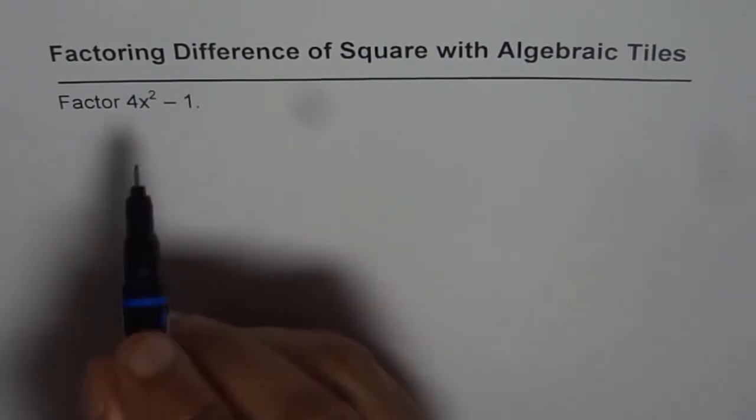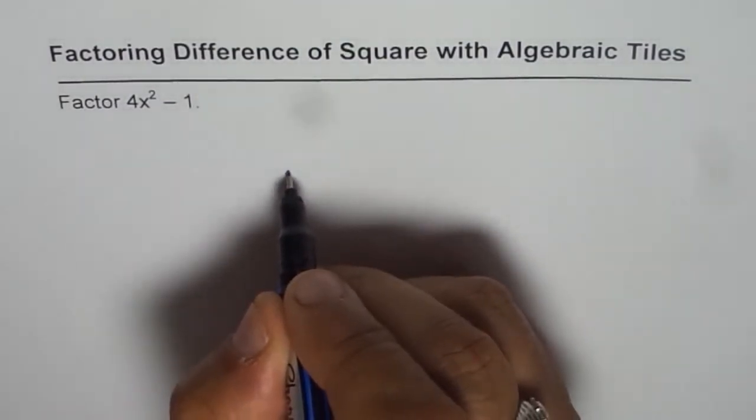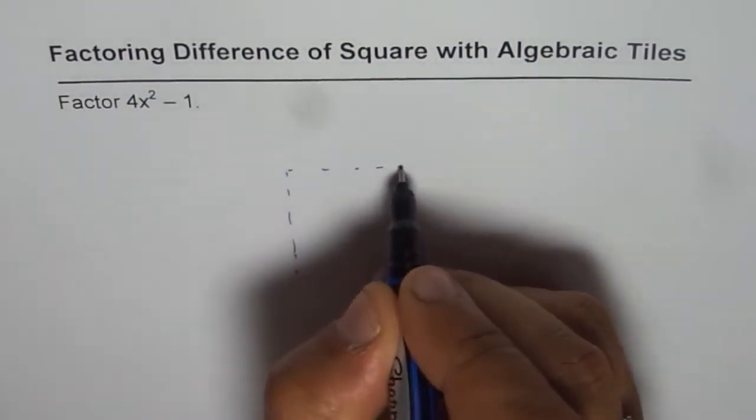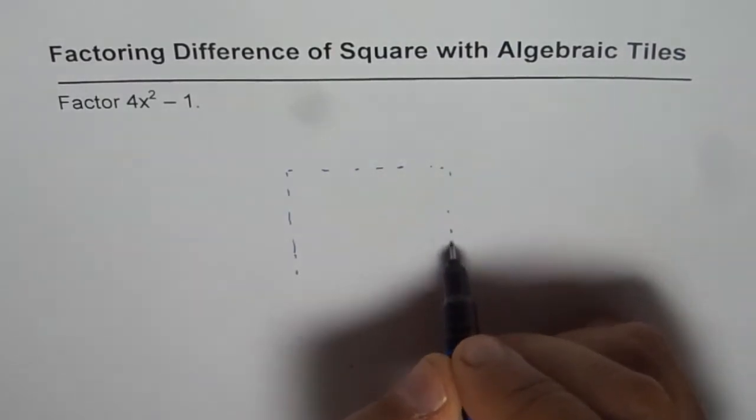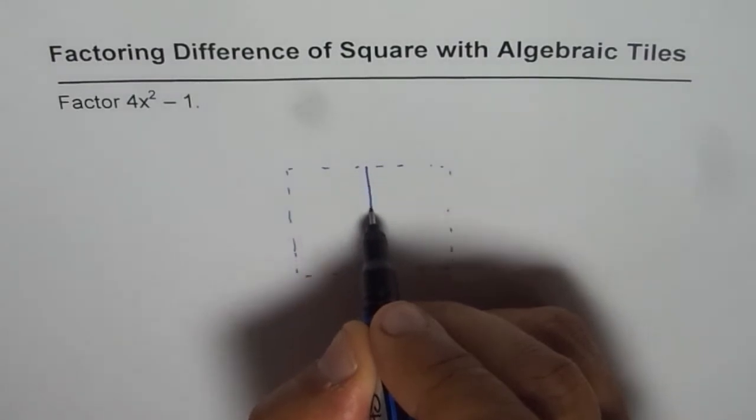What we are given here is 4x² tiles. Let us place them in the form of a square. We will make up a 4x² square which looks like this. So in this I can have 4x².